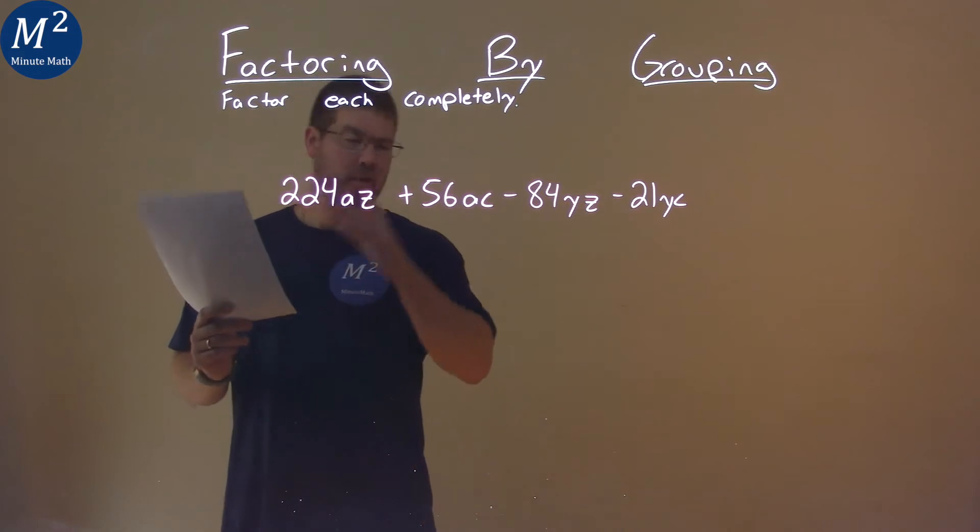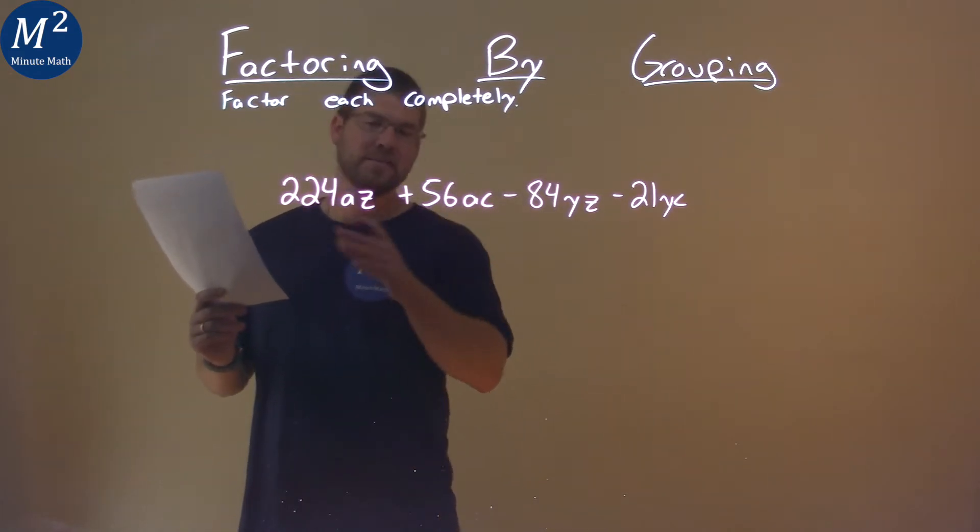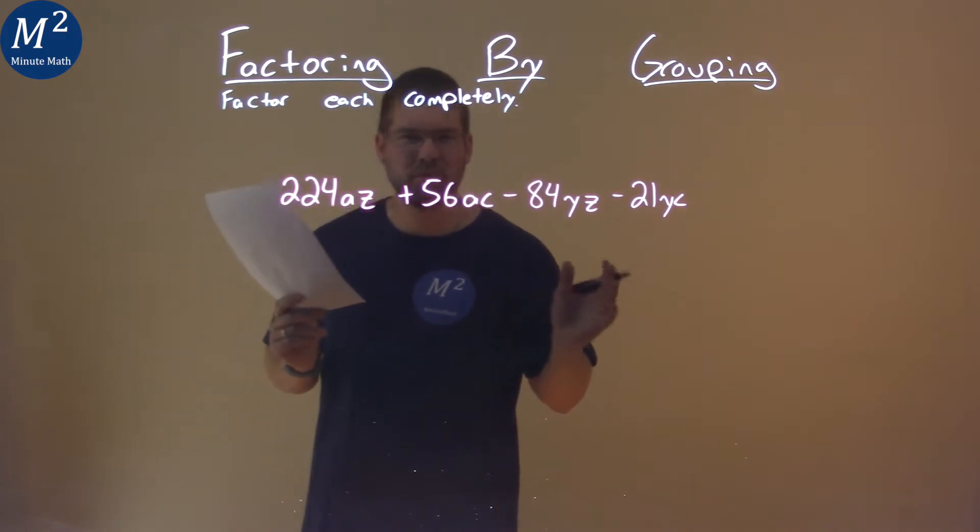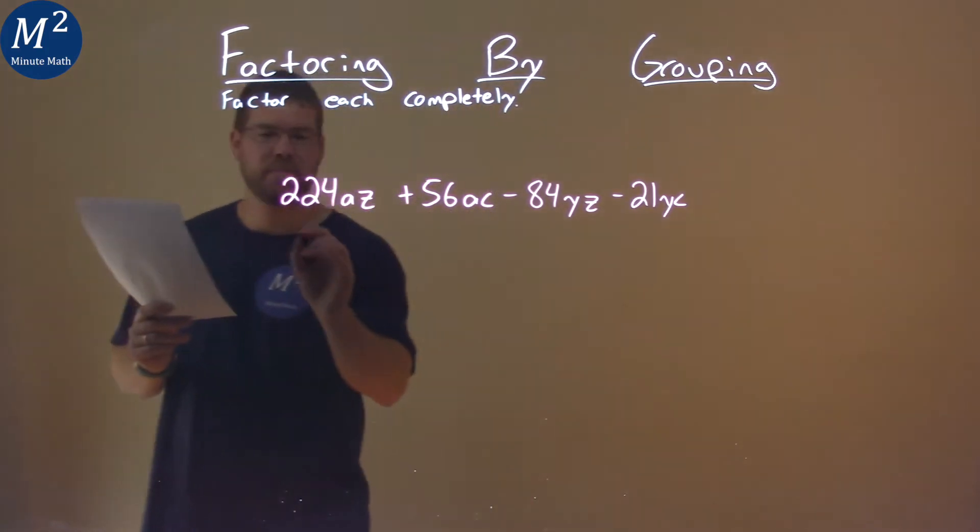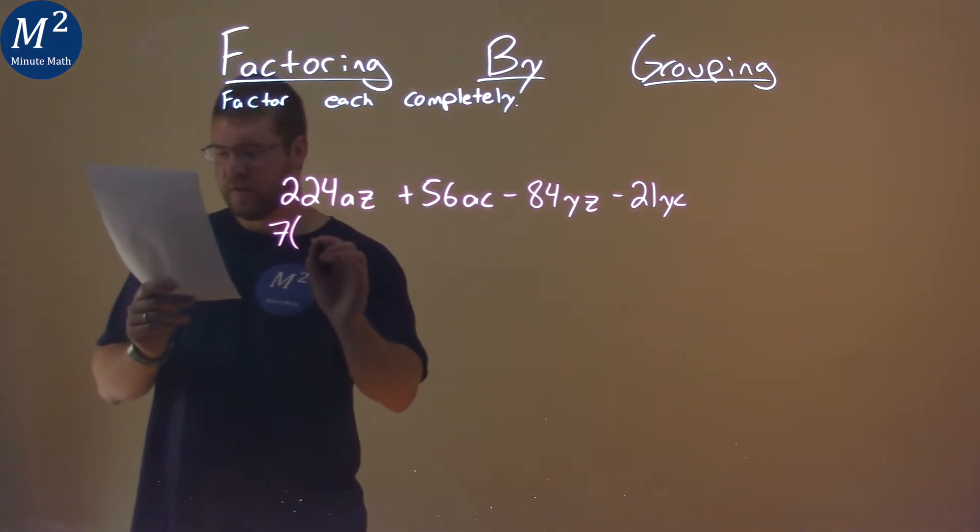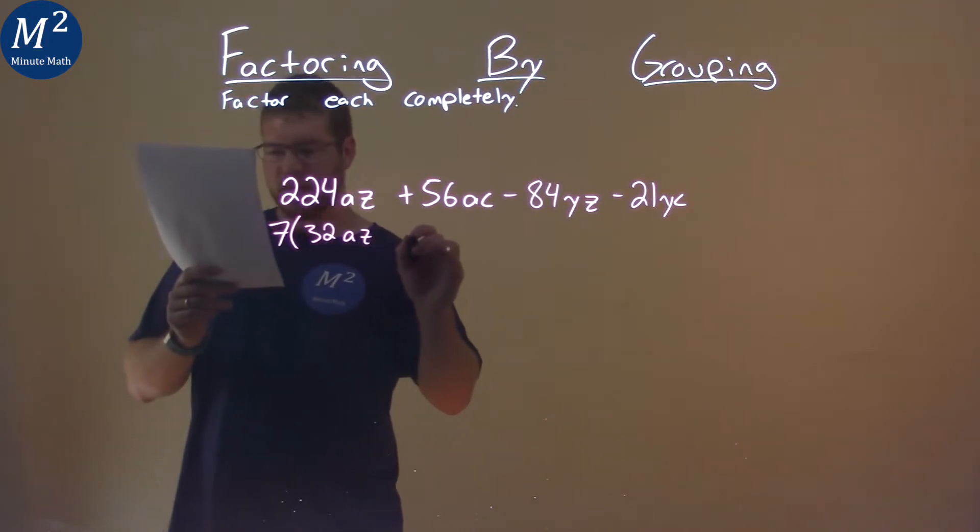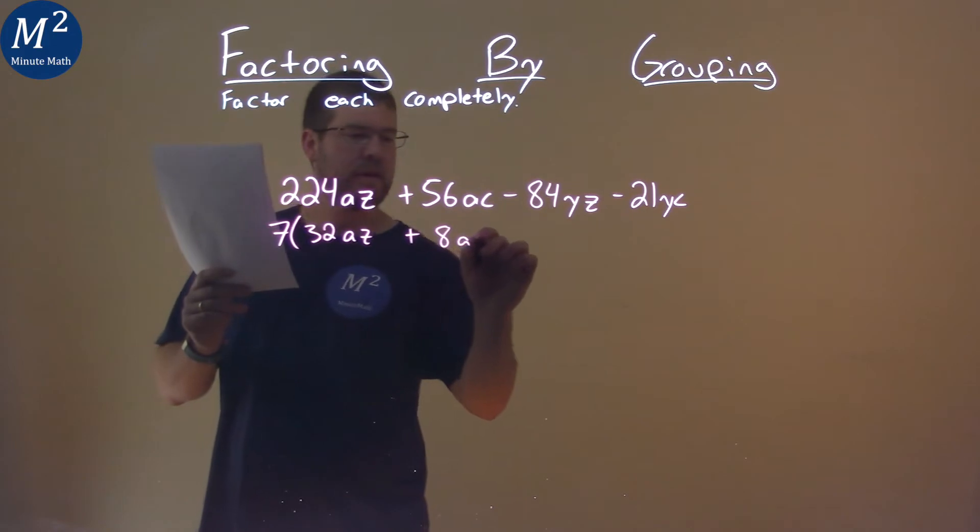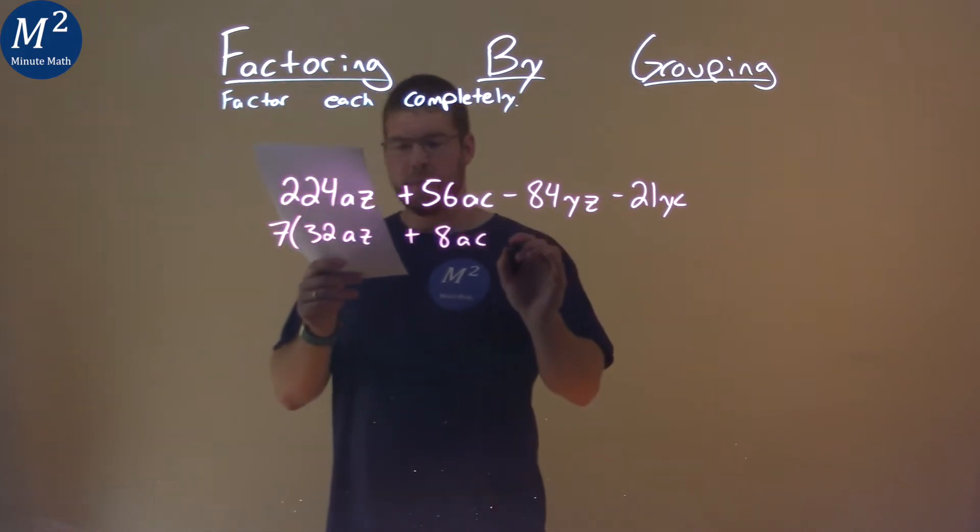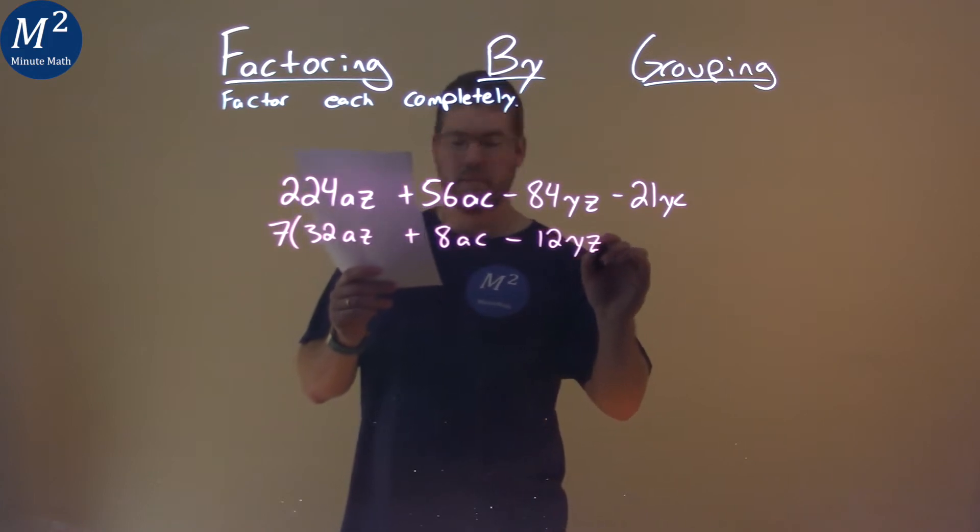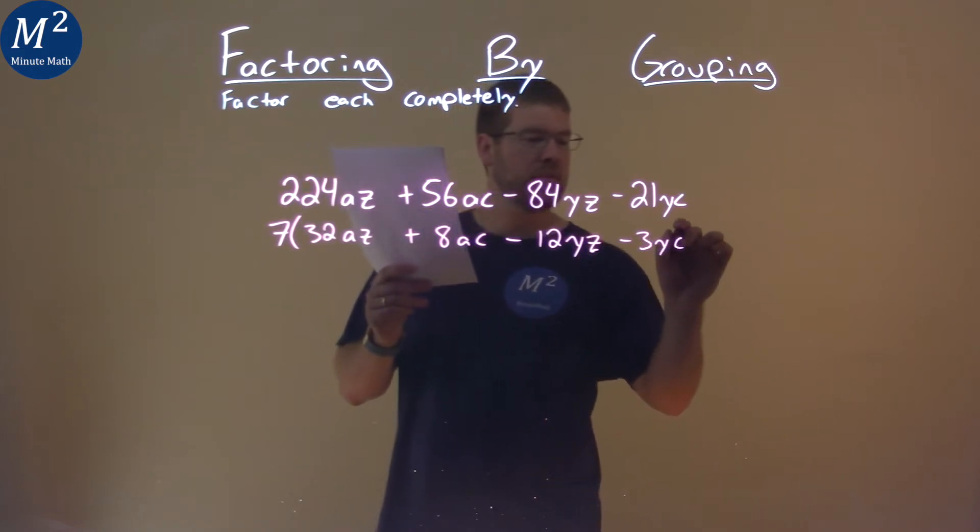Well, one thing I know you probably don't know off the top of your head—I didn't until I investigated—a 7 goes into all parts here. So let's make this a little simpler and pull out a 7. By pulling out a 7, I'm left with 32AZ plus 8AC minus 12YZ and minus 3YC.